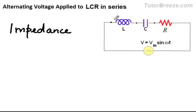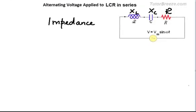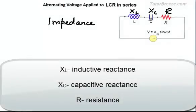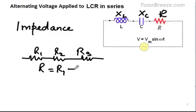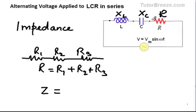The impedance comes partly from the inductor, partly from the capacitor, and partly from the resistance, because the inductor offers an inductive reactance, the capacitor offers a capacitive reactance, and the resistor offers a resistance. Just as three resistors in series have a total resistance R1 plus R2 plus R3, in this case we cannot simply add them up and say the total impedance is XL plus Xc plus R.